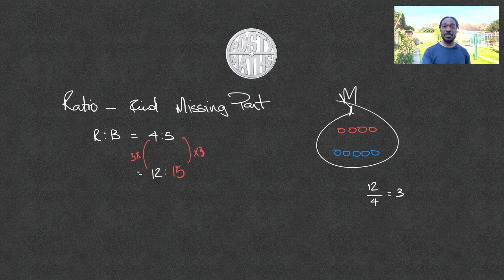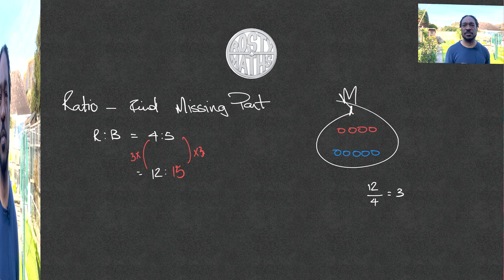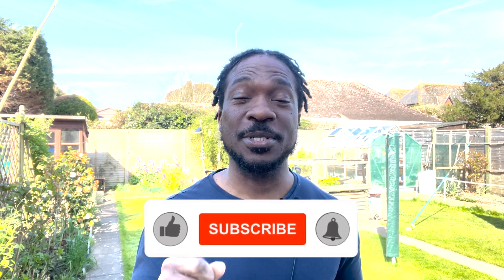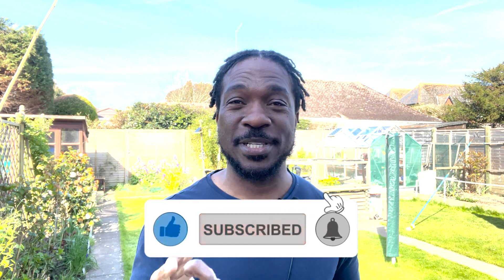And that's how you find the missing part of the ratio. Was that pretty straightforward for you? If it was, smash that like button. Don't forget to subscribe below, and also hit that notification bell so you don't miss another upload. But that brings us to the end of this video of finding the missing part of a given ratio. Until I see you on the next one though, peace.